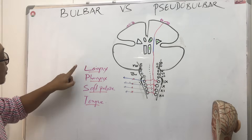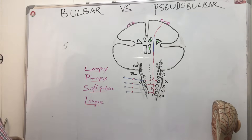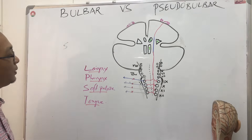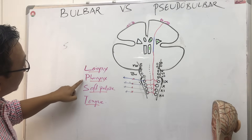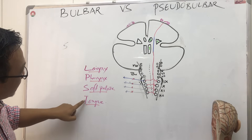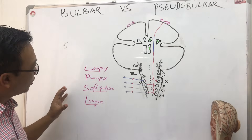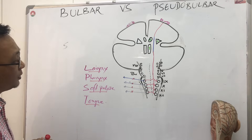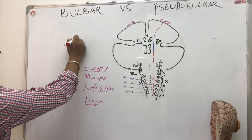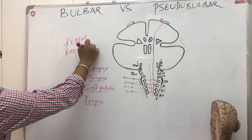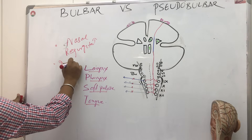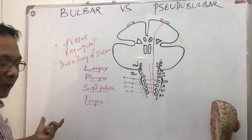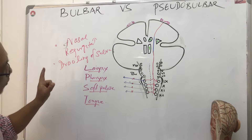In bulbar palsy, the clinical features include difficulty in swallowing. There will be problems with the pharynx, voice, soft palate, and movement of the tongue. The basic problems include nasal regurgitation, drooling of saliva, and aspiration of liquids.